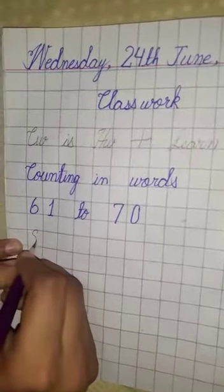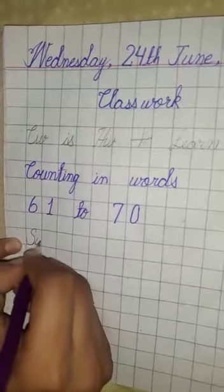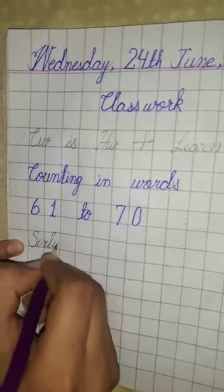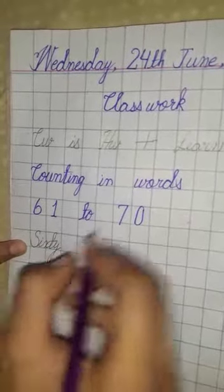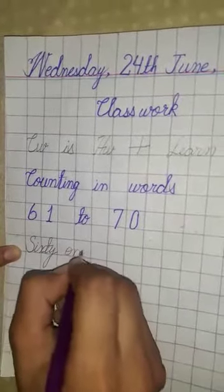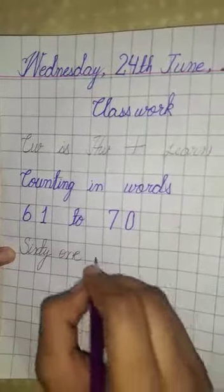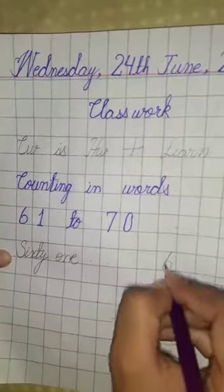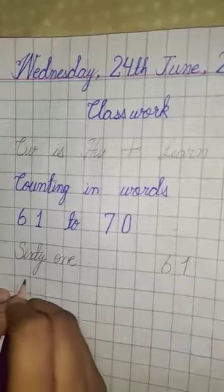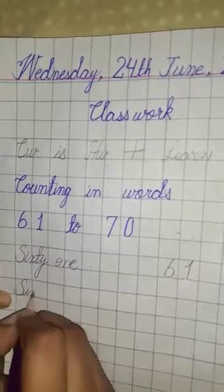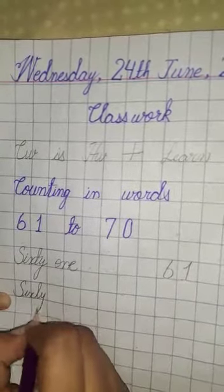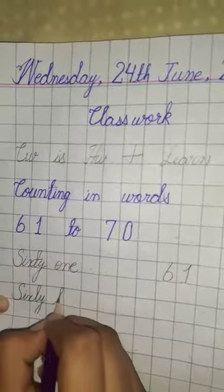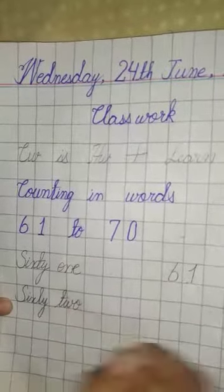The S shape should be small at the top and bigger at the bottom. Sixty. Skip one block and write 'one' - O, N, E. Skip four blocks, then write 'sixty-two' - S, I, X, T, Y, sixty, T, W, O, two.